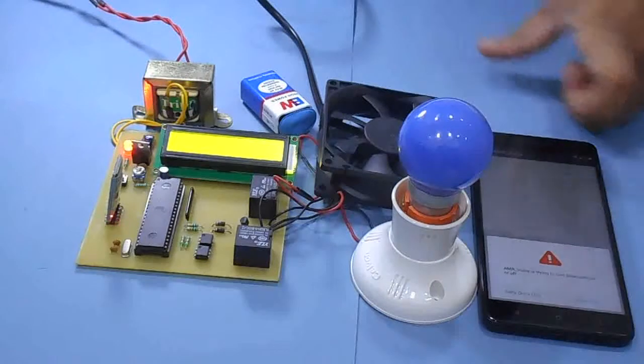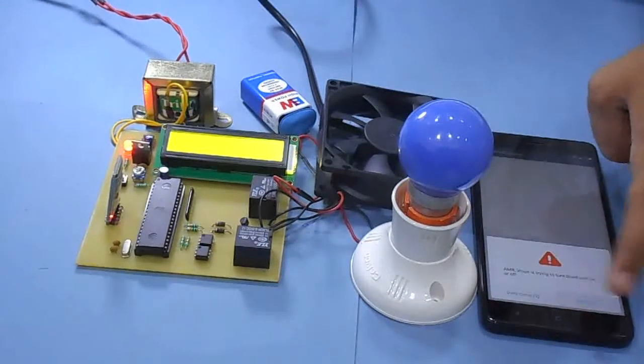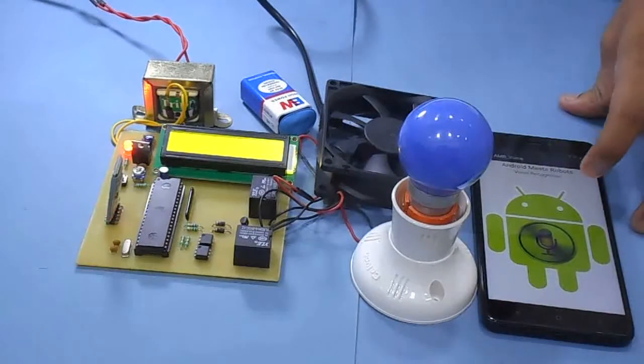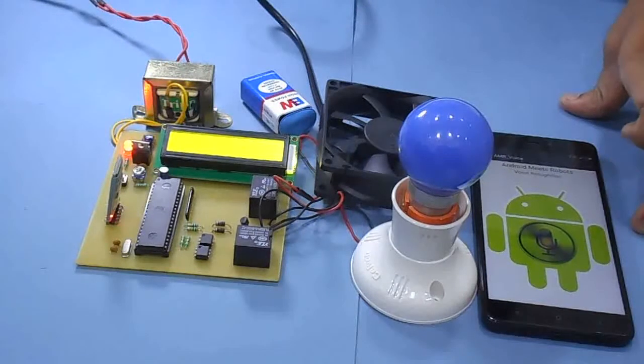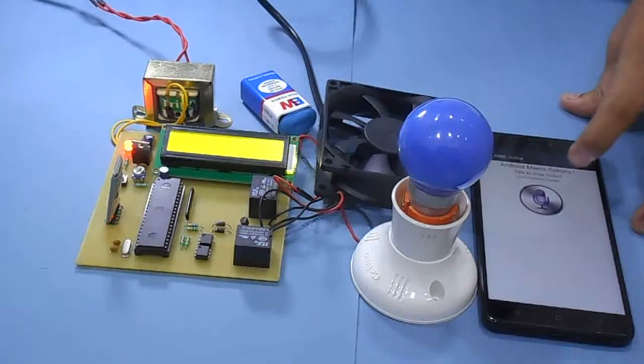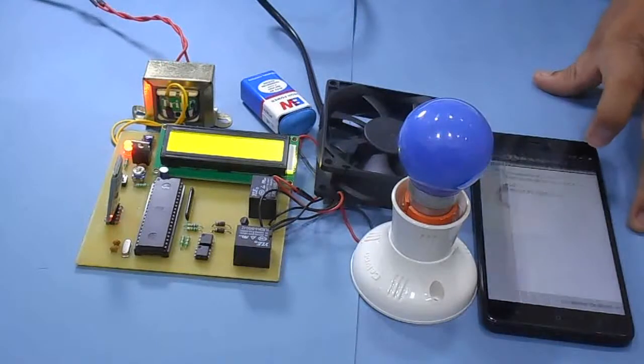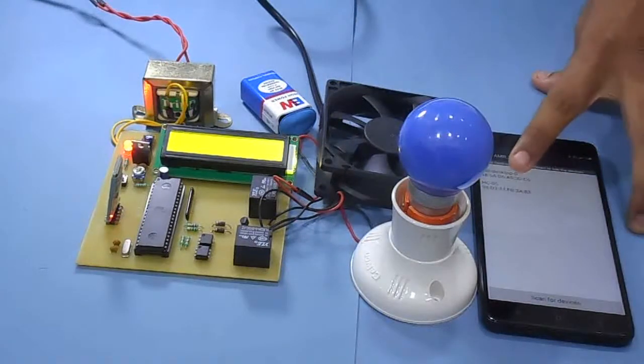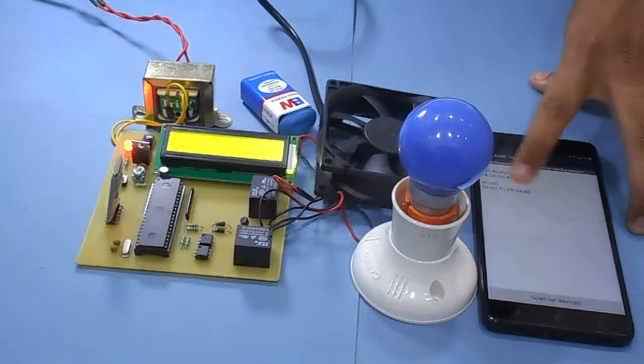You have to open this AMR voice app, allow the Bluetooth connectivity, choose the option here connect the robot, and select this HC05 address.